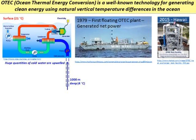In 1979, Lockheed and some other companies built what they called the mini-OTEC - the world's first floating OTEC plant. It actually did generate net power, answering the key question of whether you'd spend more energy pumping cold water up than you'd get out in electricity. The answer is no - they generated about 50 kilowatts gross and 25 kilowatts net. That proved it works.